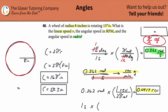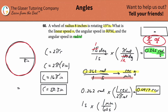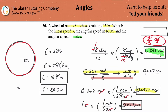Next, convert the 1 second in the denominator to minutes. We know that 1 minute equals 60 seconds. So we place seconds in the denominator — they cancel — and minutes in the numerator. Dividing 1 by 60 gives approximately 0.0167 minutes. That's our intermediate value for the time conversion.